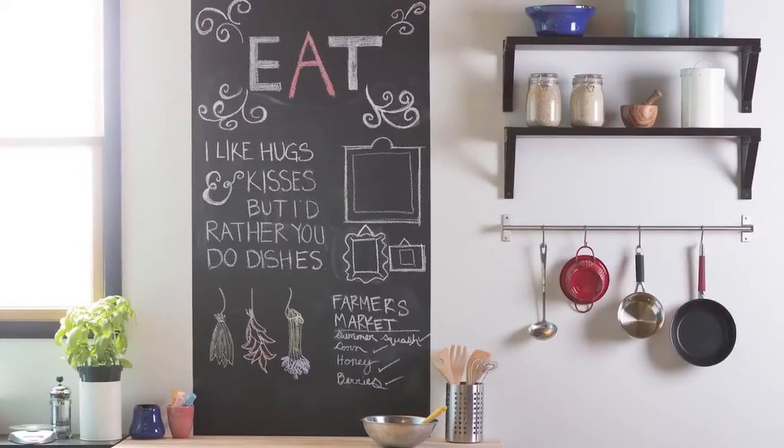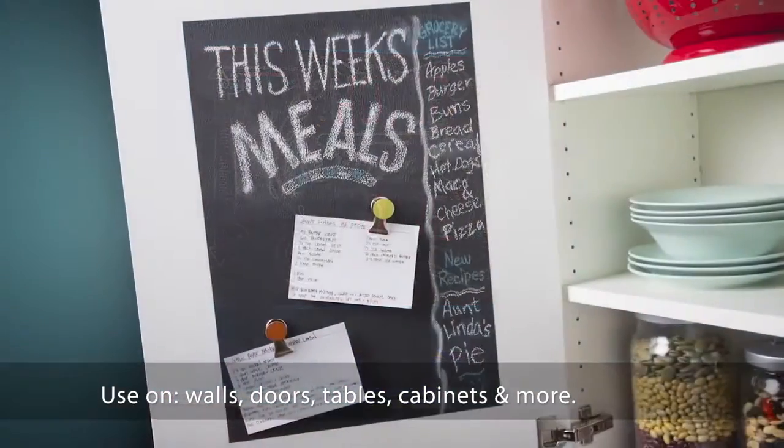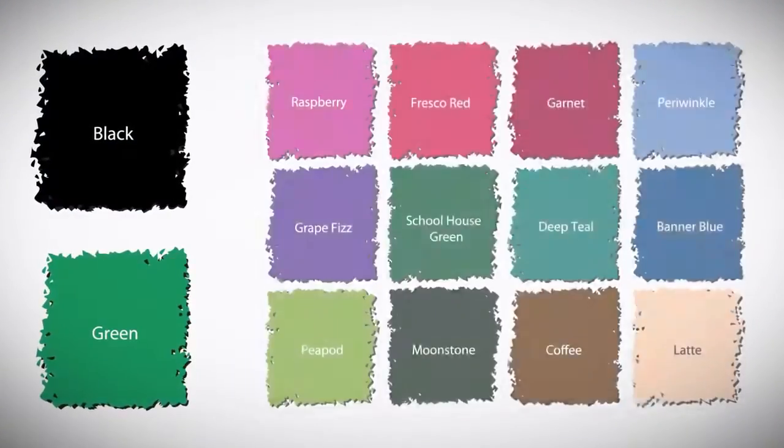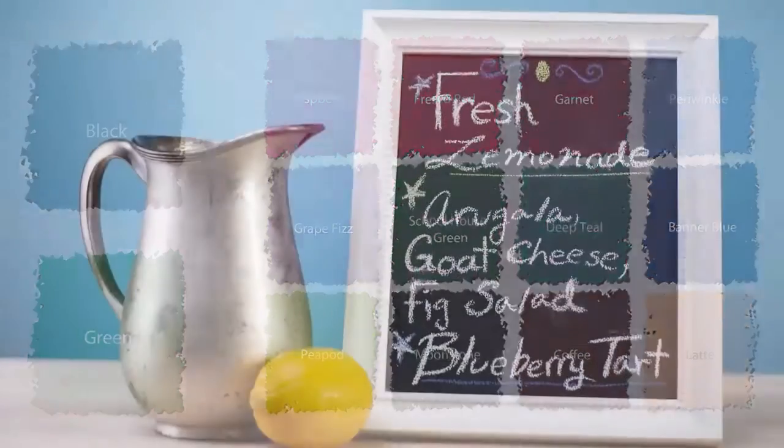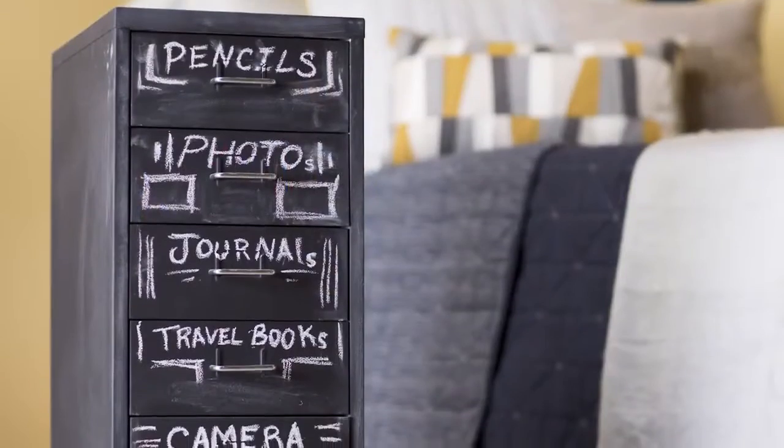With Rust-Oleum Chalkboard Paint, you can create a writable surface on walls, doors, tables, cabinets, and more. Available in black, green, and tintable in a variety of colors, how and what you paint is up to you. From personalized menu boards to flower pots and more, you can bring your unique style to the surface.